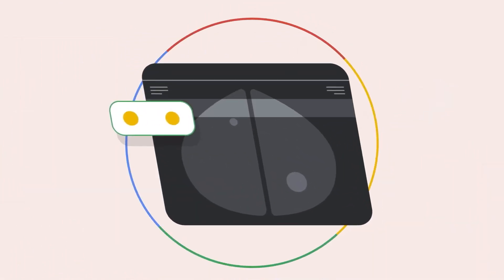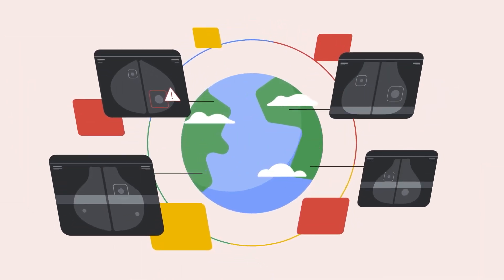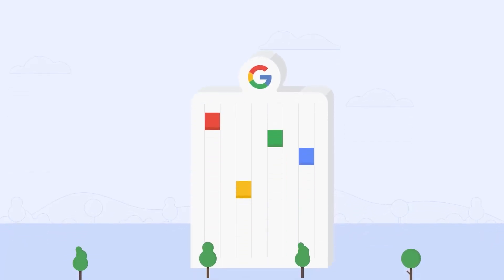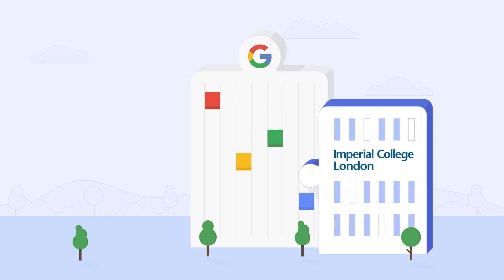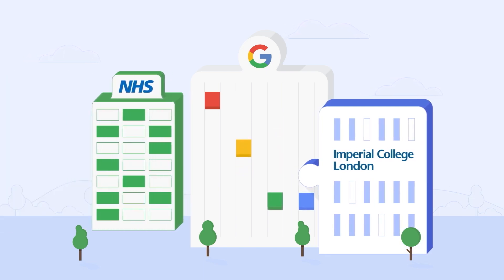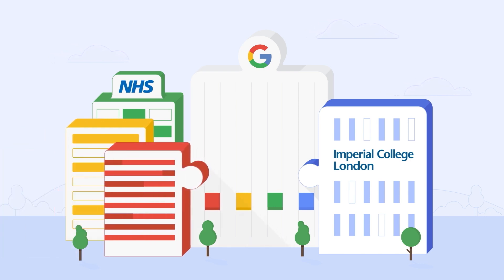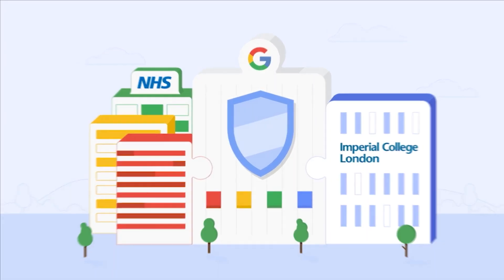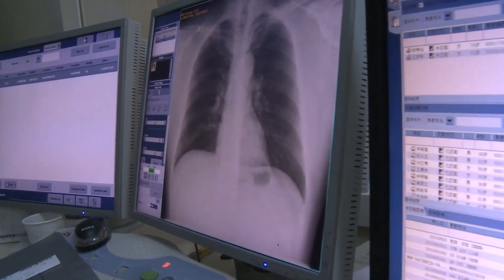Moreover, MedPalm 2 is versatile and can handle various natural language tasks related to medicine such as answering questions, summarizing, translating, and generating text. It can answer factual, conceptual, or hypothetical questions about medicine, summarize long or complex texts into concise and coherent texts, translate texts from one language to another while preserving the meaning and accuracy of the medical terms and concepts, and generate natural and relevant texts based on a given prompt or context.